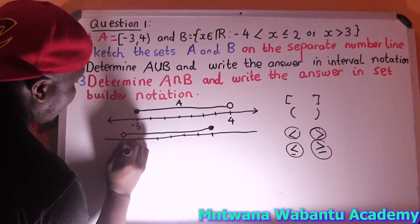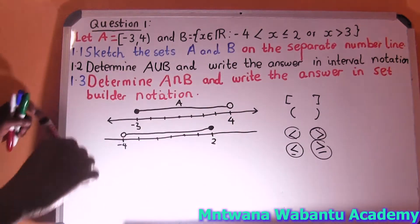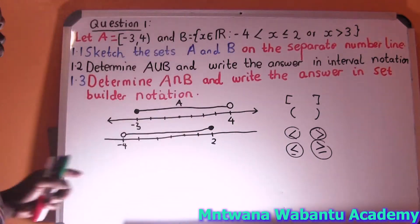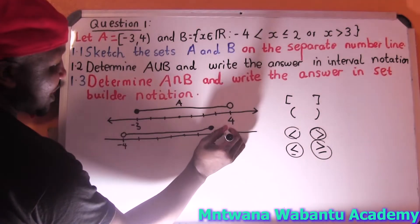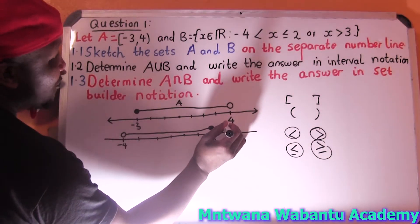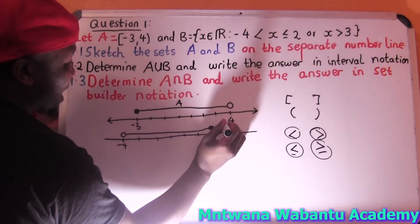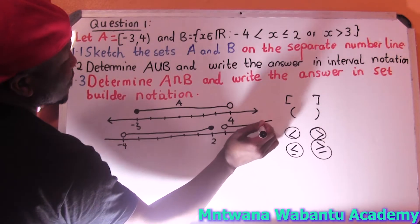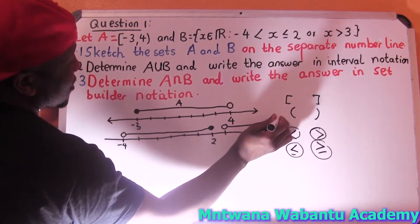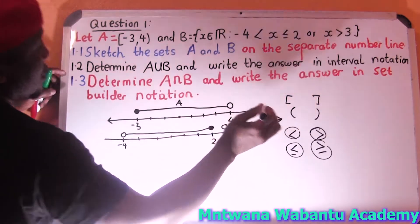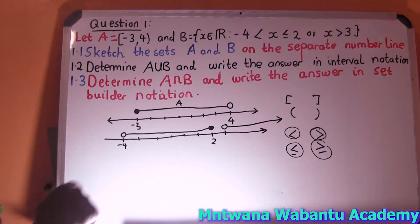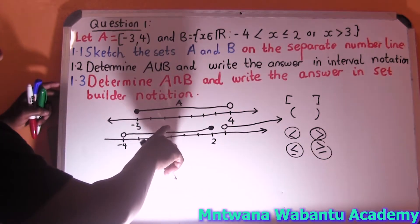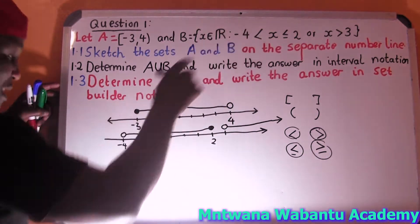We're not done with B yet. B also starts again from 3 all the way to positive infinity. So 3 is excluding — open dot — and then it goes all the way to positive infinity. All of these parts together give us Set B.